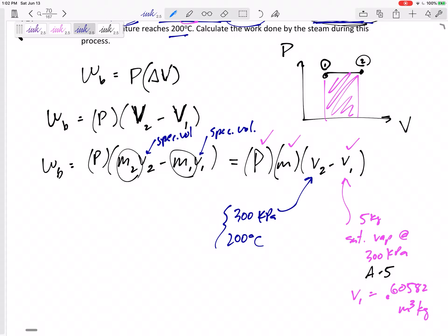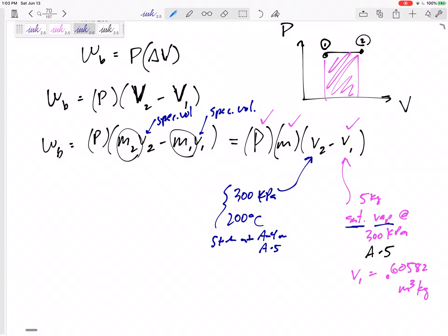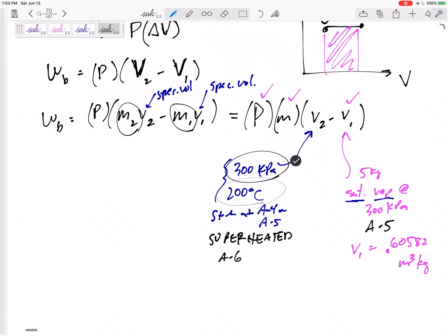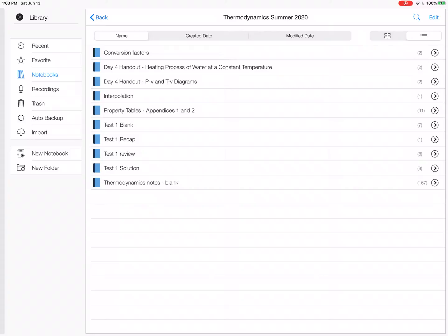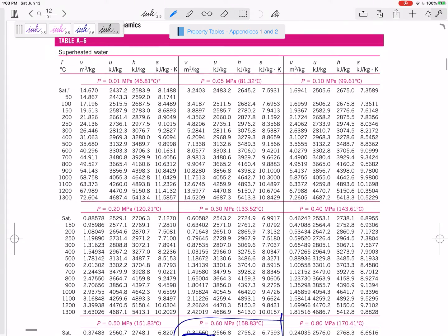You could guess that if it was saturated vapor and we're heating it at constant pressure, it's going to be superheated. I would start at A4 or A5 and it would show me the temperature is too high or pressure too low. Either way, it leads to superheated. So I'd go to table A6 for 300 kPa, 200°C.